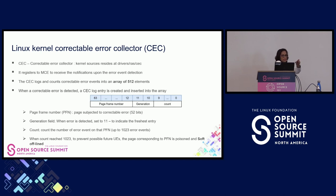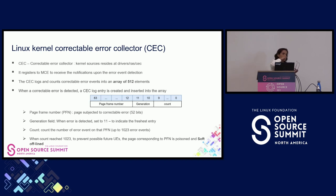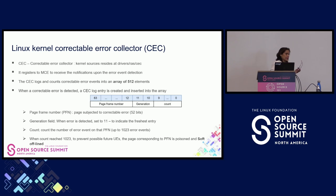The generation field is used to decay the entry. When an error is detected, it is set to the value 1 to indicate a fresh entry for that page frame number. The count forms a threshold counter — when the count reaches a value like 10, 20, or 30, it gives an indication that the particular page frame number has been corrected that many times, and might eventually become uncorrectable. The correctable error collector uses this information to trigger corrective action, like offlining that particular page.